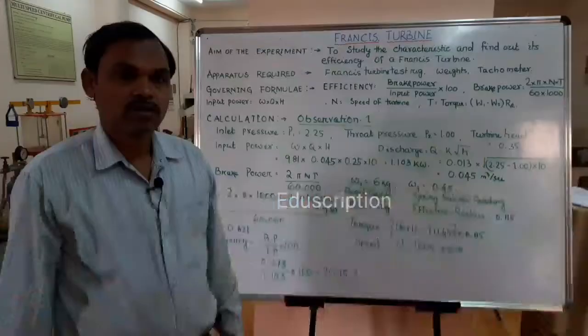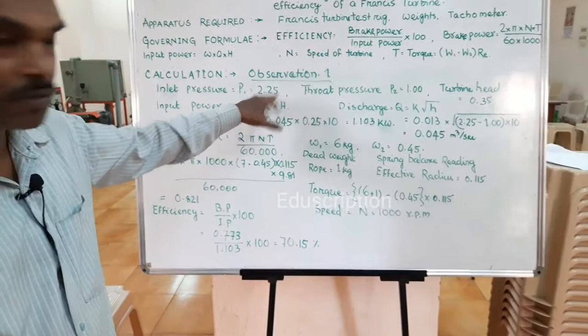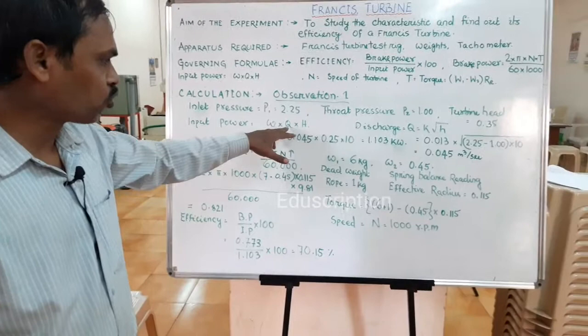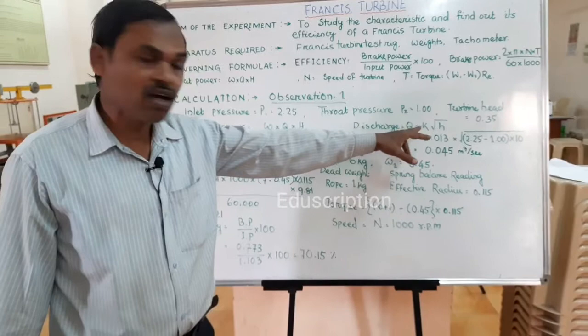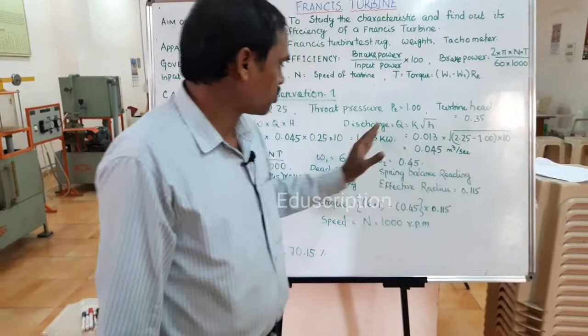Next we move to the calculation part. Initially we take inlet pressure as 2.25 kg per centimeter square, throat pressure as 1, and turbine head as 0.35. For the basic calculation of input power, that is W×Q×H, the discharge is Q = K × √(P1 - P2). The venturi constant K has a value of 0.013. When we convert P1 and P2 into head we multiply by 10, and finally the discharge is 0.045 cubic meters per second.